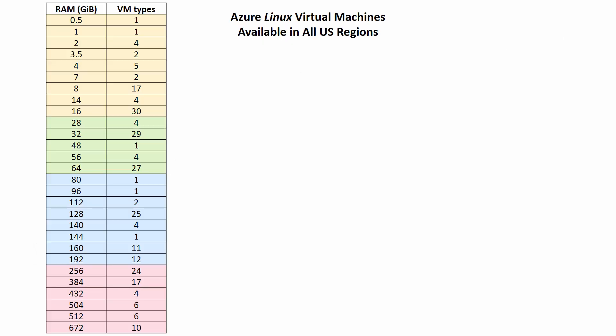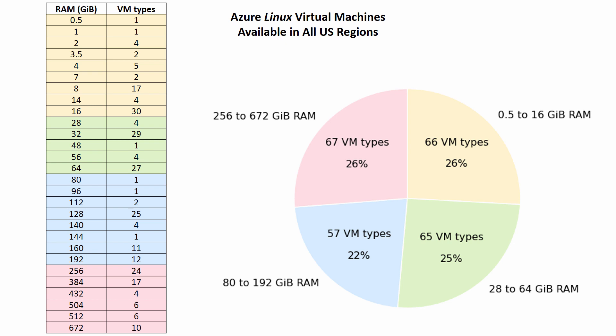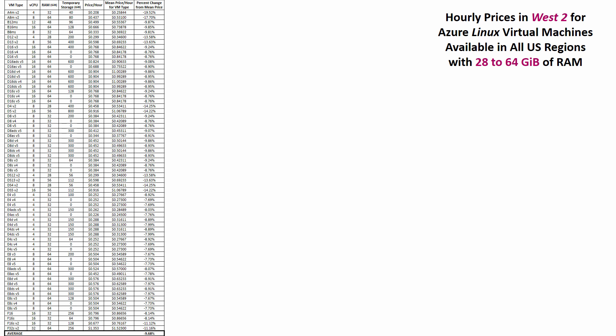To look for pricing patterns, I first considered 255 Linux VM types that are each available in all nine regions. I chose the amount of RAM in each VM type as a variable I could use to group together VMs of relatively similar size. RAM is a good proxy for VM size, so we can see if there are regions that have better prices for small VMs versus other regions that have better prices for large VMs. I was able to get nearly a quarter of the VM types in each of the four groups. For example, look at the second group highlighted in green — there are four Linux VM types that come with 28 GB of RAM. And if you count the VM types with RAM from 28 to 64 GB, you get a total of 65 VM types in the second group.